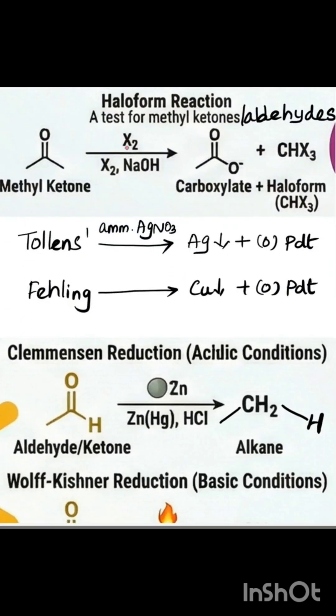The next category is the Haloform reaction, Tollens, and Fehling's — all of these are tests for carbonyl groups. In the Haloform reaction, the important condition is that a methyl group must be attached to the aldehyde or ketone for the reaction to proceed, forming a haloform. If iodine is used, the product is iodoform. All three reactions are oxidation reactions and will give carboxylic acid as a product, as you can see here.